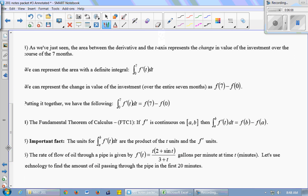So we can represent the area with a definite integral, the integral from 0 to 7 of f'(t)dt. That tells you the area under the curve. It counts stuff below the t-axis as negative, which we did because that represented a loss.